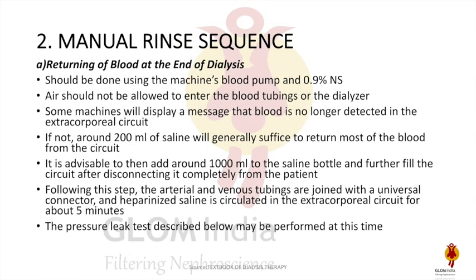Let's discuss the manual rinse sequence. The first step is returning the blood at the end of dialysis using the machine's blood pump and 0.9% normal saline. Air is very thrombogenic and should not be allowed to enter the blood tubing or dialyzer, as this will decrease total cell volume and dialyzer efficiency. Some machines display a message when blood is no longer detected in the extracorporeal circuit. Generally, 200 ml of saline will suffice to return most of the blood, followed by about 1000 ml of saline passed through the circuit after disconnecting from the patient.